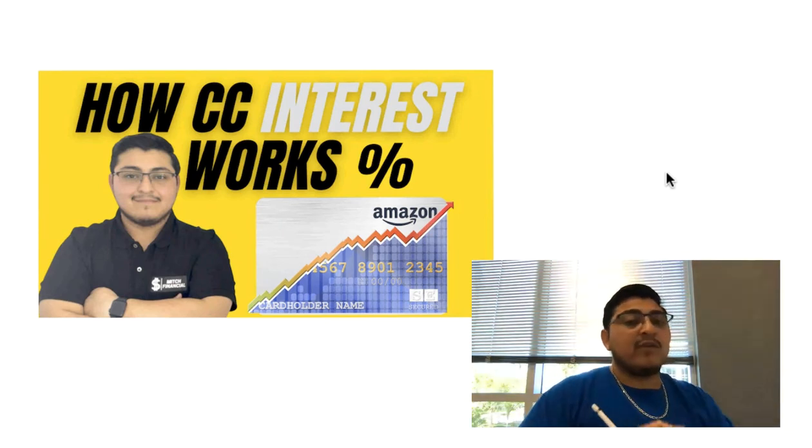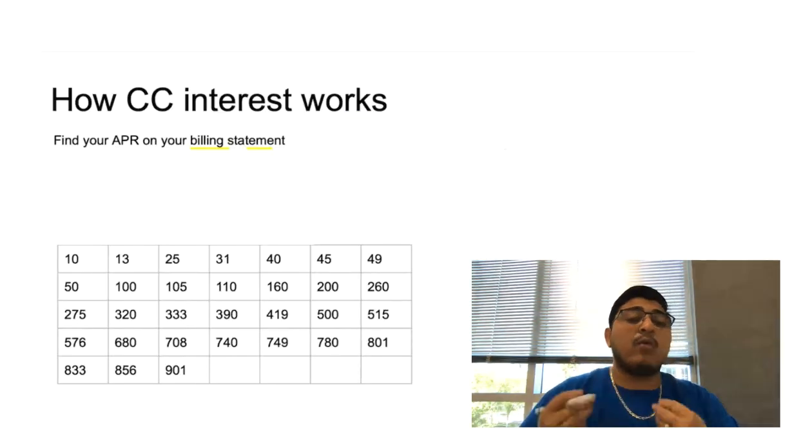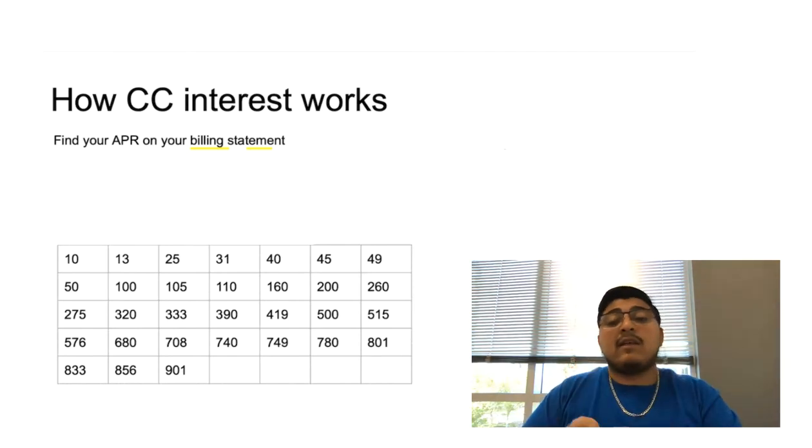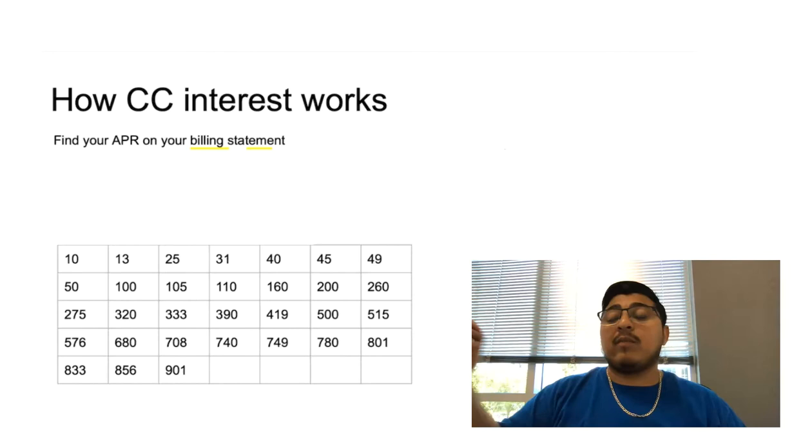The first thing you need to do when calculating how much credit card interest works, especially for your credit card, is find out what your APR is for that credit card. This is going to vary depending on what credit card company you have and your credit score when you apply for this credit card.